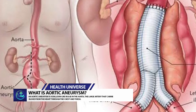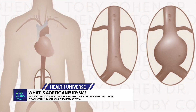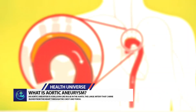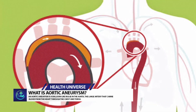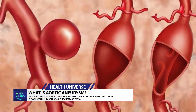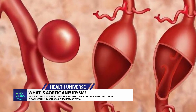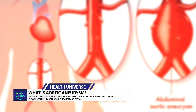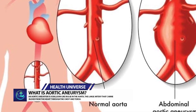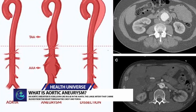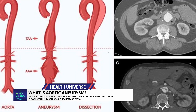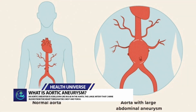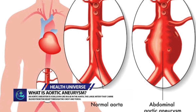Facts about aortic aneurysm in the United States: aortic aneurysms or aortic dissections were the cause of 9,904 deaths in 2019. About 59 percent of deaths due to aortic aneurysm or aortic dissection happened among men. A history of smoking accounts for about 75 percent of all abdominal aortic aneurysms. The U.S. Preventive Services Task Force recommends that men 65 to 75 years old who have ever smoked should get an ultrasound screening for abdominal aortic aneurysms, even if they have no symptoms.